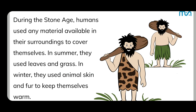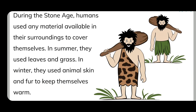During the Stone Age, humans used any material available in their surroundings to cover themselves. In summer they used leaves and grasses, and in winter they used animal skin and fur.